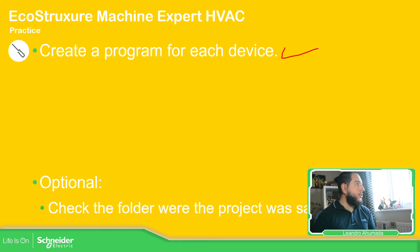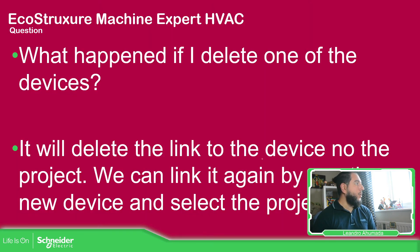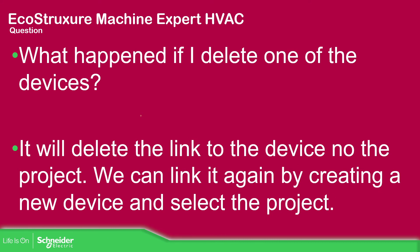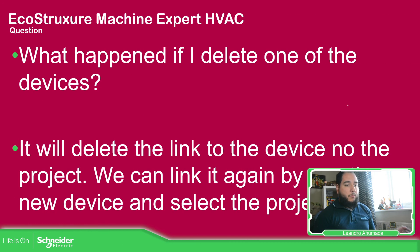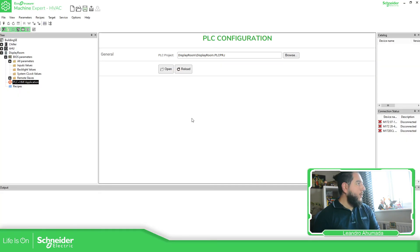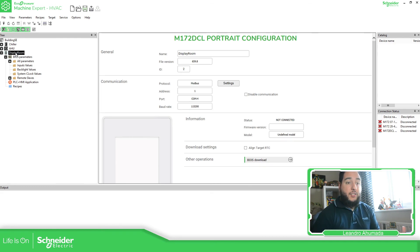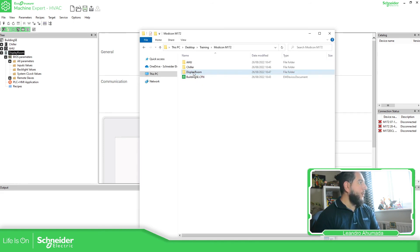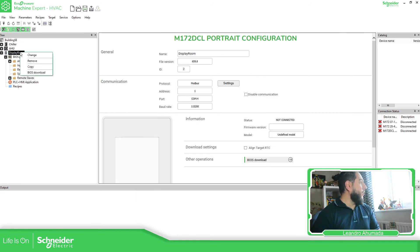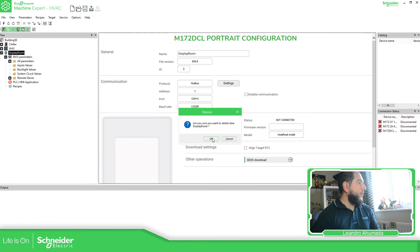We already created a program for each of the devices and checked where the files are stored in the main folder. One question is: what happens if I delete one of the devices from the installer? Basically you can delete from the installer, but it does not delete from the folder — so you will need to do it manually. Let me just show you. So let's say I'm going to delete this display because I'm not going to use it. If we pay attention here in the folder, I have this display room that has the project. Right-click — remove — yes, I want to remove it.